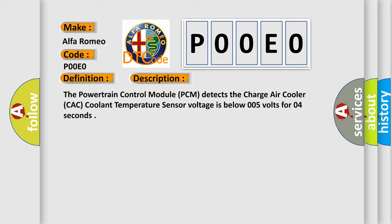And now this is a short description of this DTC code. The powertrain control module PCM detects the charge air cooler CAC Coolant Temperature Sensor Voltage is below 0.05 volts for 0.4 seconds.